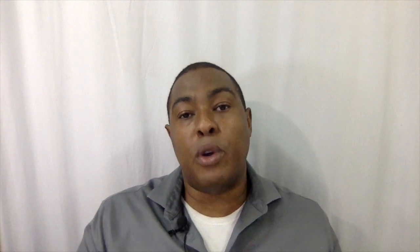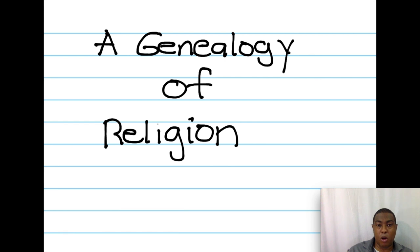And we also need to make sure that we're not anachronistic. That is, importing an understanding of religion from one time onto another time. For this next part, we're going to create a genealogy of religion. A genealogy is a model that helps us understand how a single notion or topic has changed over time. So we're going to look at how the term religion has changed over time.